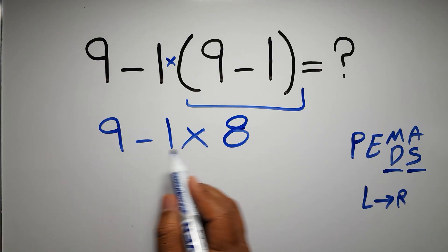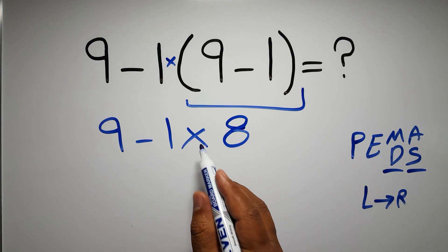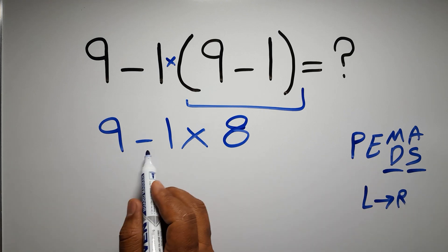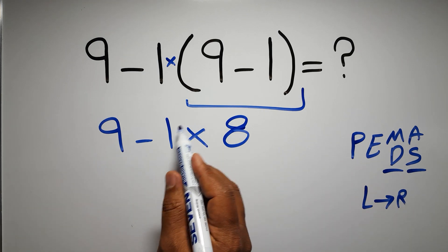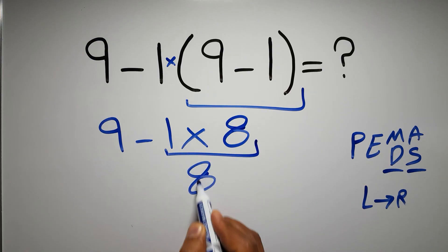Now, we have 1 subtraction and 1 multiplication. According to the PEMDAS, multiplication comes before subtraction. So first we have to do this multiplication. 1 times 8 is just 8, and then 9 minus 8 gives us 1, and this is our final answer to this problem.